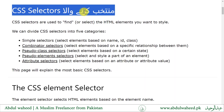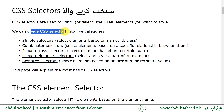CSS selectors are used to find or select the HTML elements you want to style. We can divide CSS selectors into 5 categories.